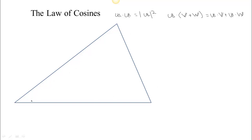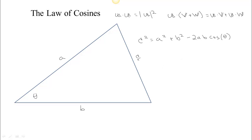Imagine we have a triangle. I want to remind you of the law of cosines. If we have an angle in a triangle with sides A, B, and C, the law of cosines says that C squared equals A squared plus B squared minus 2AB times the cosine of the angle in between. It's like a special case of the Pythagorean theorem — if the angle theta is 90 degrees, cosine of 90 is zero, and you recover the usual Pythagorean theorem. It relates the sides to the cosine of a particular angle.